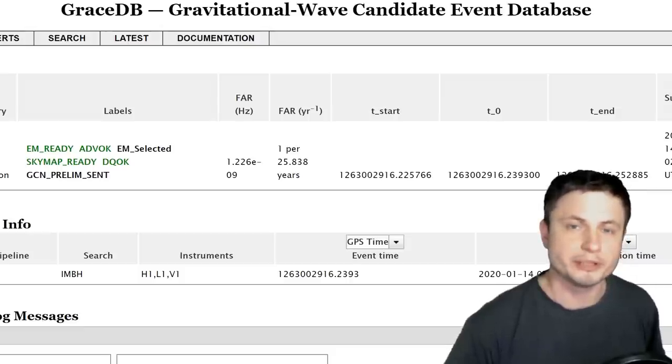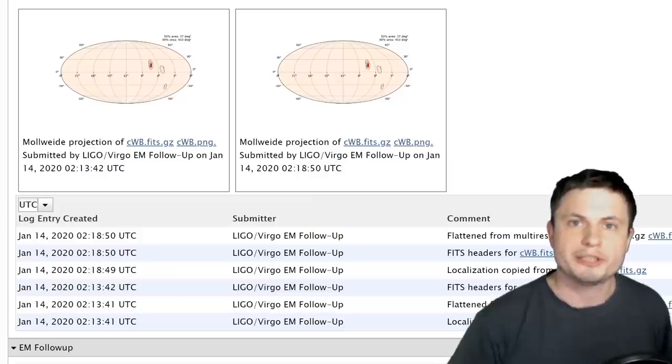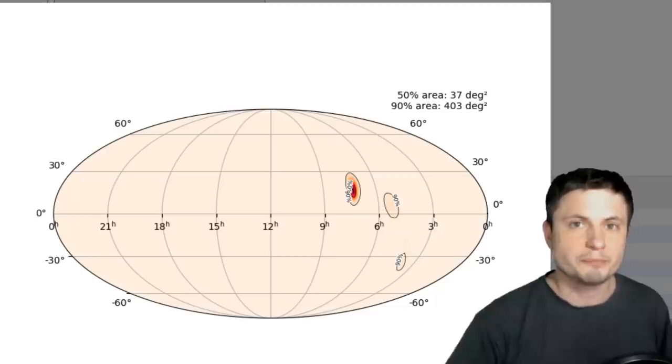You can actually even see this report yourself on the so-called GRACE database that keeps track of all of the gravitational waves and has a really accurate up-to-date approach to posting all of the gravitational waves pretty much as soon as they're detected. So here on January 14 of 2020 these scientists reported detecting unusual gravitational waves coming from the same region where the Orion constellation is located. And because this was only a few weeks after we detected the dimming effects this obviously raised a lot of interesting questions.